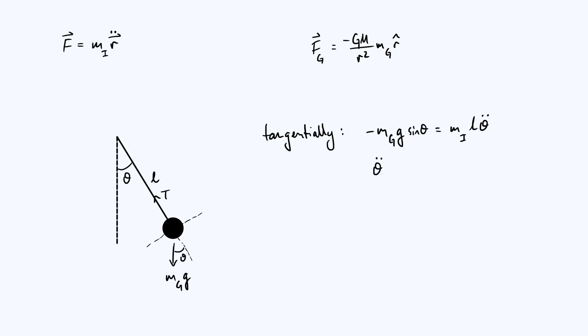The usual way is divide through by m, and the m's cancel. But here we're allowing mg and mi to be different. So we end up with theta double dot plus gravitational mass over inertial mass times g over L sine theta equals zero. That's our equation of motion.